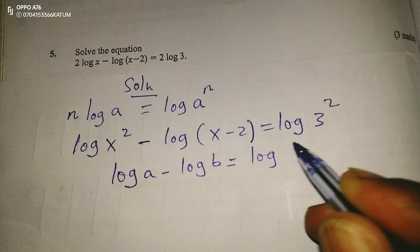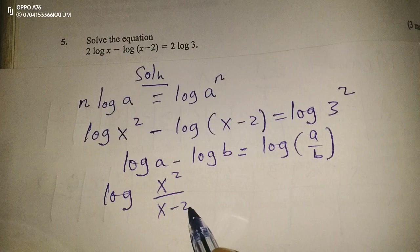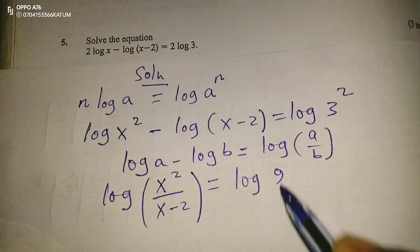With this, we should take the logarithm, then we have x² divided by (x minus 2). This is equal to the logarithm of 3 squared, which is 9.